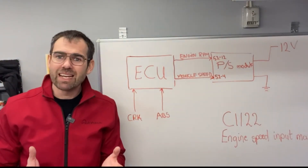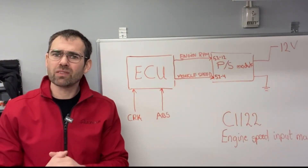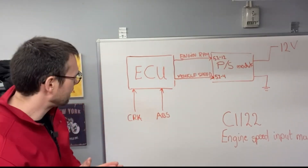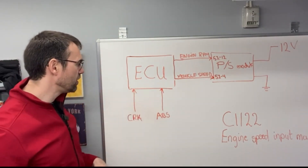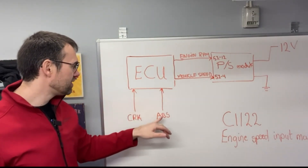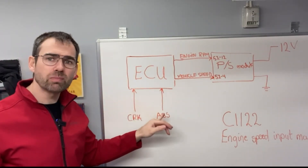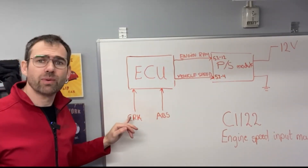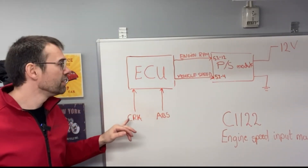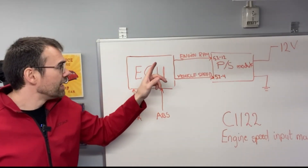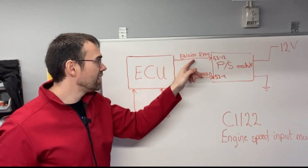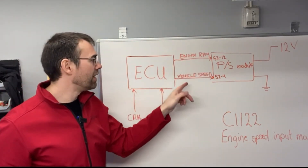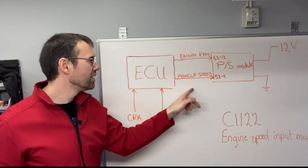So not really what I hoped for, because what we just found out was that the electronic control unit receives a signal from the wheel speed sensor and from the crankshaft sensor. It does pass on the engine speed signal. However, the vehicle speed - it does not.